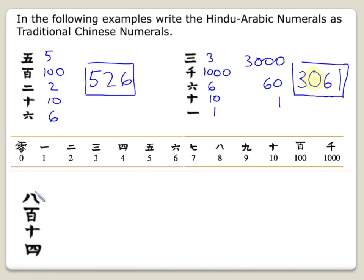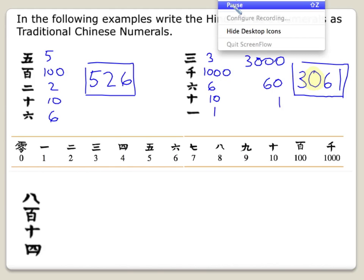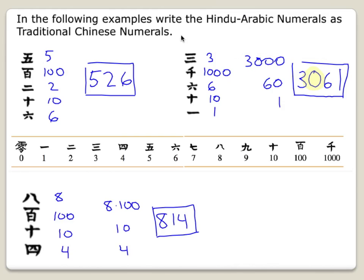Try this next one on your own — pause the video and come back when you're done. In this one you might find something interesting: we have 8 times 100, and then just the symbol for 10 with no digit written above it. That means it's 1 times 10, but you don't have to put the 1 in there. So it's 10 and 4, making this 814.